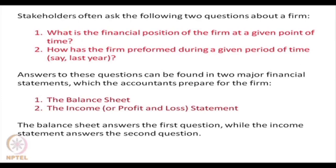What is the financial position of the firm at a given point of time? How has the firm performed during a given period of time, say last year? Answers to these questions are normally found in two major financial statements: the balance sheet and the income or profit and loss statement. The balance sheet answers the first question — what is the financial position of a firm at a given point of time — while the income statement answers the second question, namely how has the firm performed during a given period of time, say last year.